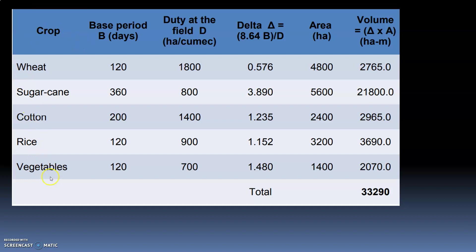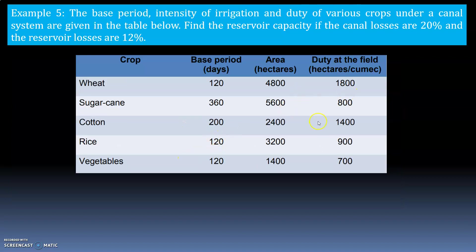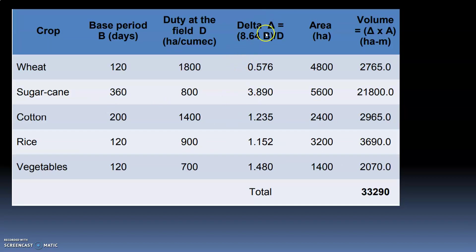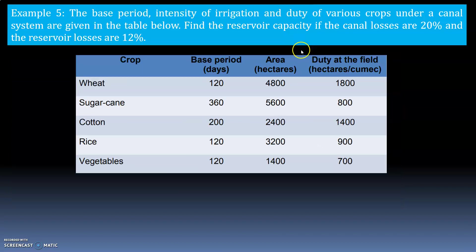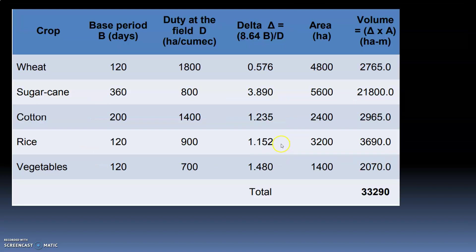Crop, base period, and duty at the field are given. I have added delta, which is 8.64 × B divided by D. The areas given are 4,800; 5,600; 2,400; 3,200; and 1,400. Now we have to calculate the volume.